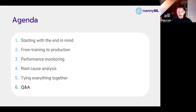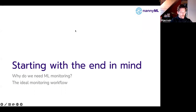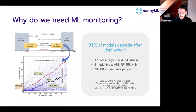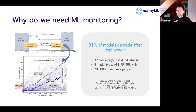Starting with the end in mind — why do we need machine learning monitoring and what is the ideal workflow? I'd love to refer to a paper we recently discovered: 'Temporal Quality Degradation in AI Models,' published in Nature. They did a very elaborate data science experiment on 32 datasets across four industries, built four models for all of these datasets, and then ran 20,000 experiments per dataset pair.